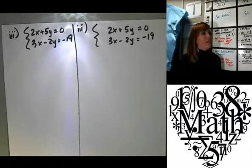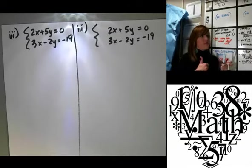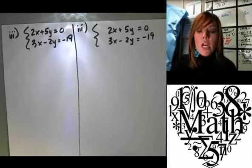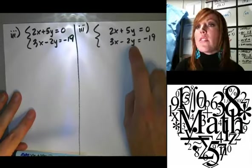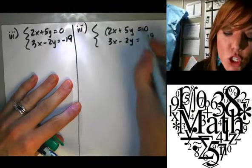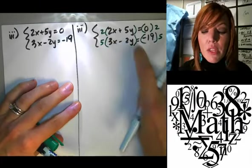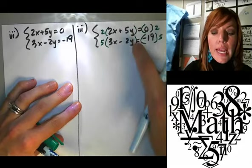Okay. So 2x plus 5y equals 0. 3x minus 2y equals negative 19. Okie dokie. Lydia. Yeah. Okay. Good. Excellent. So let me just repeat that. So she said she wants to cancel out the y's because 1 is already positive, 1 is already negative. So she wants to multiply the top 1 by 2 and the bottom 1 by 5. Because if we do top 1 by 2, bottom 1 by 5, then we'll end up with a positive 10y here and a negative 10y here.